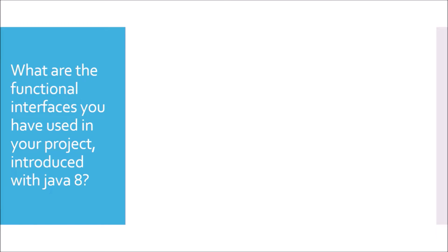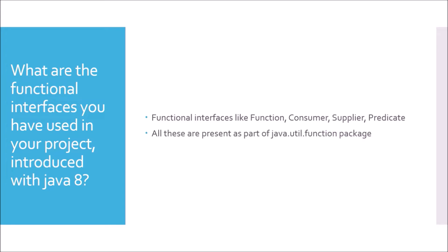What are the functional interfaces you have used in your project introduced with Java 8? With Java 8, functional interfaces like Function, Consumer, Supplier, and Predicate are introduced. There are more interfaces like this, but mostly Function, Consumer, Supplier, and Predicate are used in the real world. These functional interfaces are part of the java.util.function package. Sometimes the interviewer may ask you the difference between Function and Predicate, or what is Consumer or Supplier.